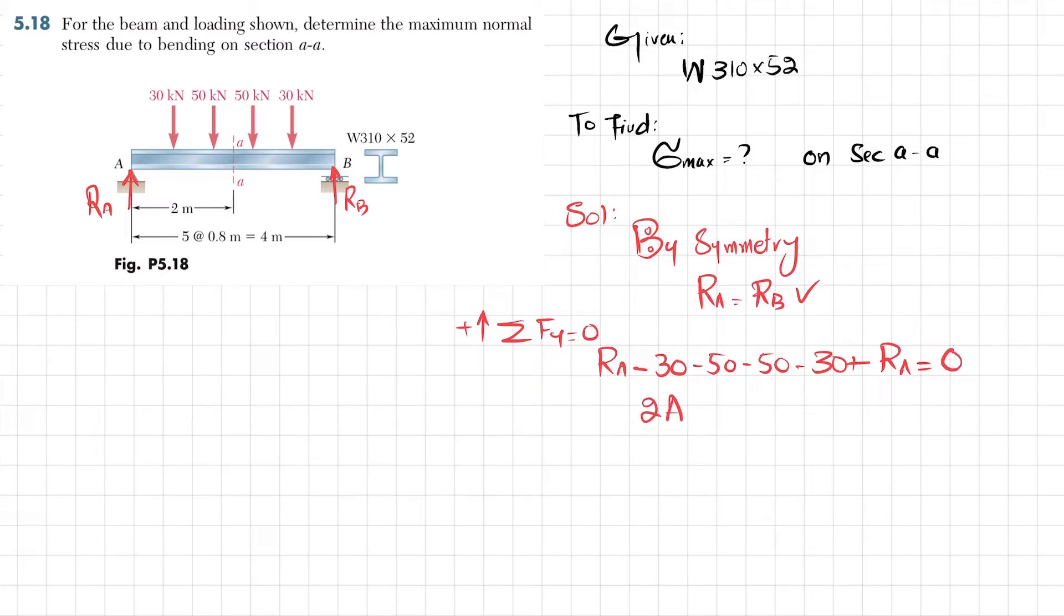It means 2 times RA will equal 160, because 50 plus 50 is 100, plus 60 is 160. So from here you will get RA equals 80 kilonewtons. Since RA equals RB, then we can write this is equal to 80 kilonewtons.